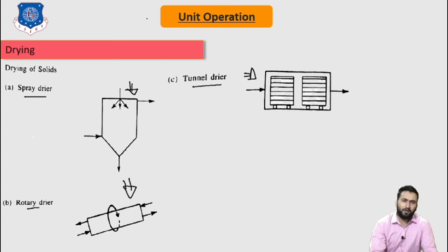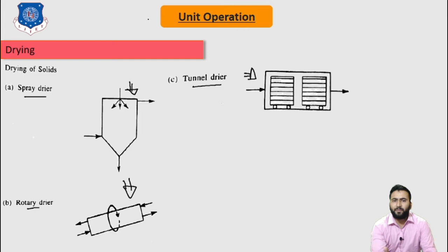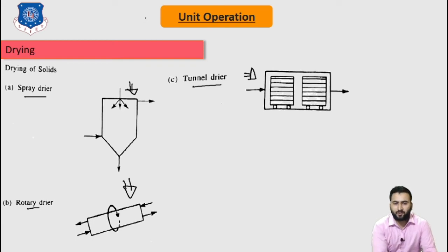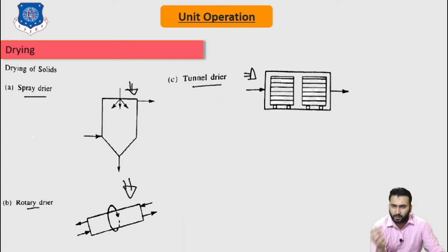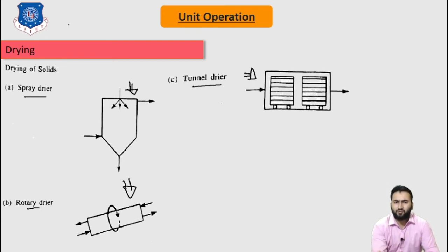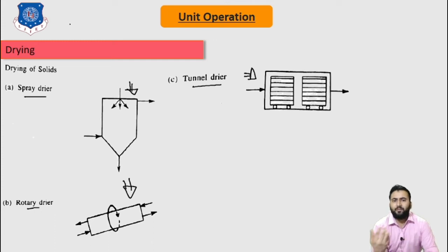The spray dryer is suitable for large-capacity operations on liquid feed to give spherical powder, and is mostly used in the production of pigments, detergents, synthesis of resins, and various inorganic salts. The rotary dryer is mostly suitable for drying free-flowing granular solids that do not dust or stick, and is used at high temperatures, mostly for calcination of cement.